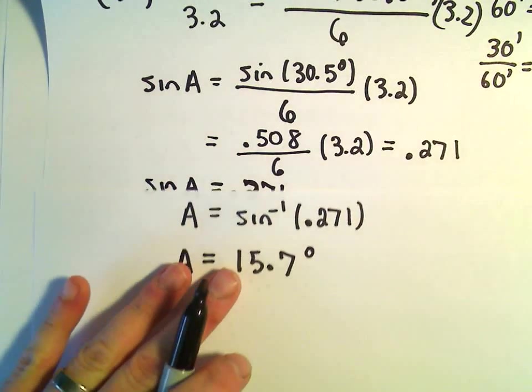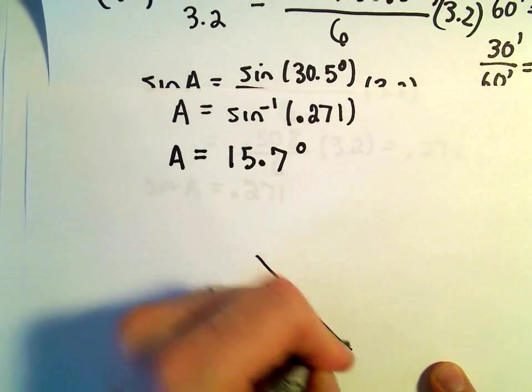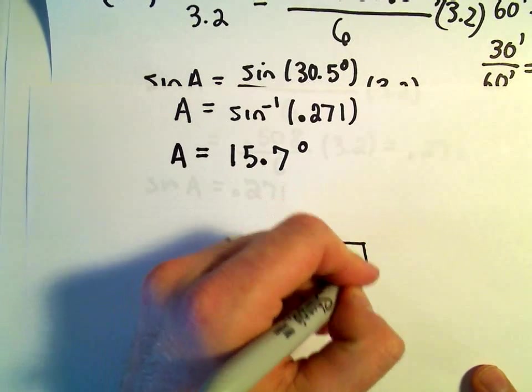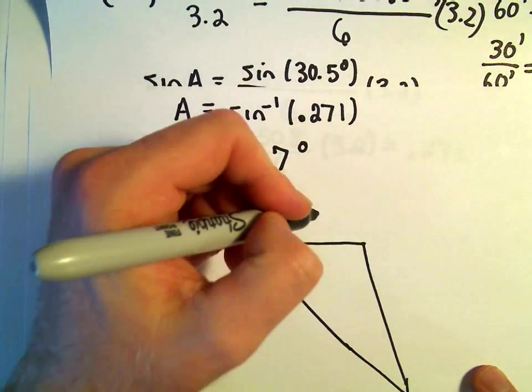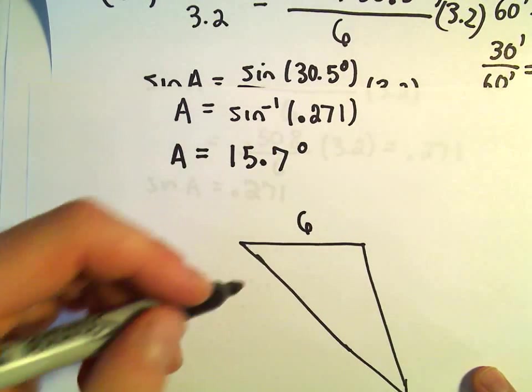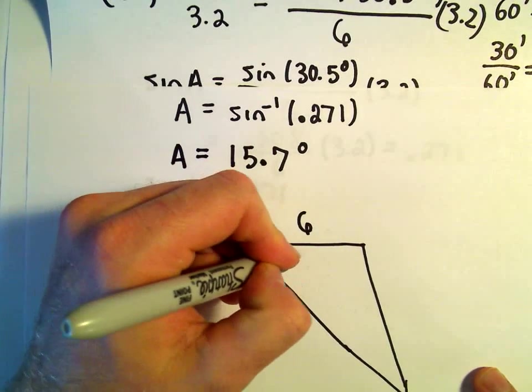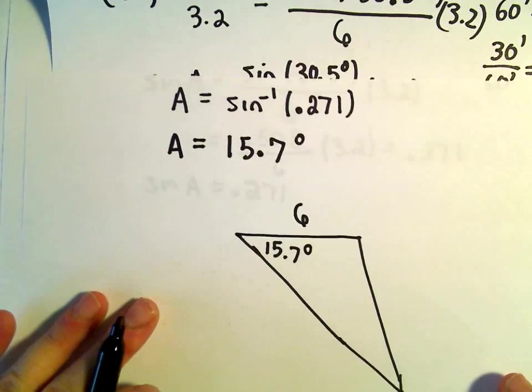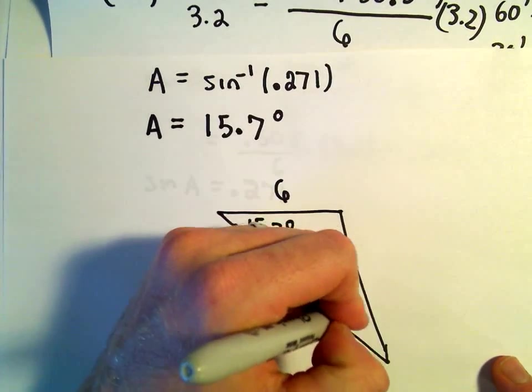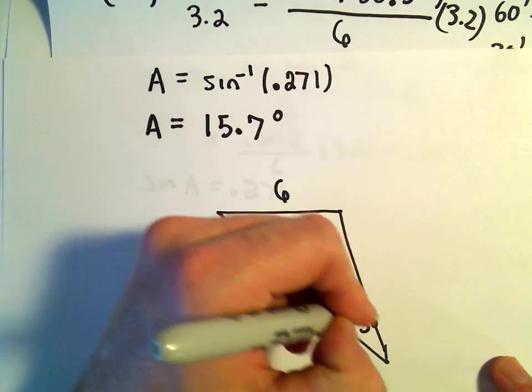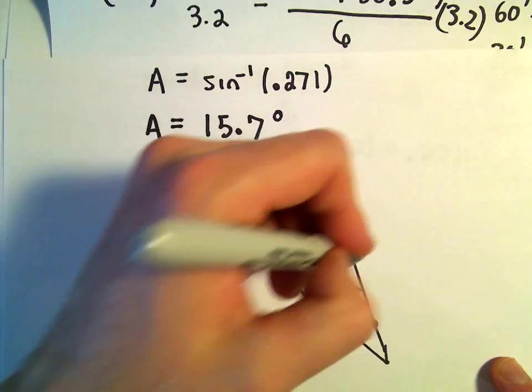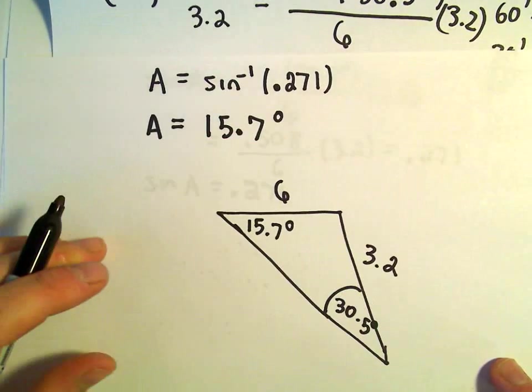Okay. So let's update our triangle here a little bit. So this was length 6. We now know that this is 15.7 degrees. This was 30.5 degrees, we said.